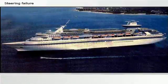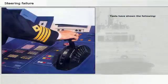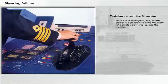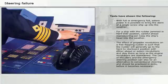Use of the main engine when steering capability is not available may be very helpful in changing the drift direction and speed or even stopping the ship altogether. Tests have shown the following: with full or emergency full astern power, it is possible to bring the stern of a single-screw ship up into the weather. For a ship with the rudder jammed in hard over position, careful ahead manoeuvring can keep the ship's head into the weather. The effect of propeller revolutions on a free-flapping rudder is such that the rudder will generally go to the hard to starboard position with either ahead or stern revolutions and stay there as long as the engine revolutions are maintained.